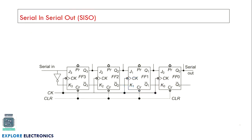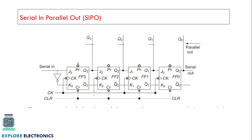The Serial In Serial Out (SISO) register is what we have already seen. Input is given serially — one zero one zero — and the output is also read serially. We need to read the output in the reverse direction to recover the original data.